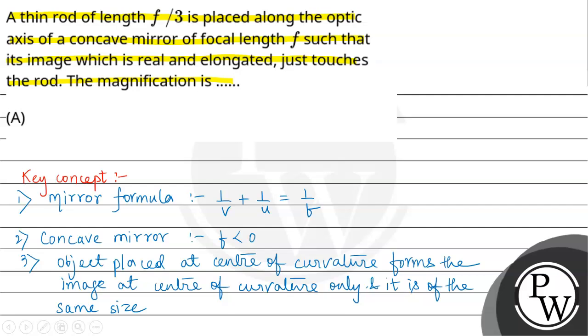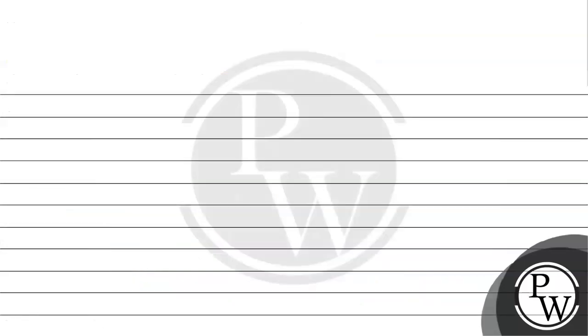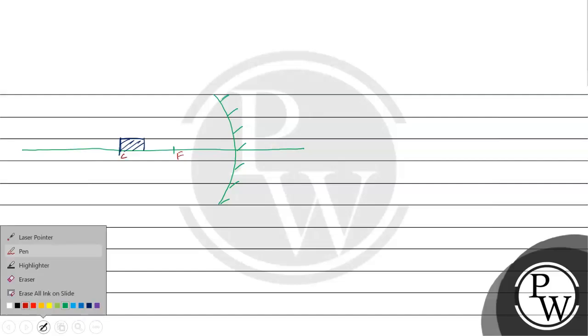With the help of this key concept we will proceed further. In our question, a concave mirror is given. This is the concave mirror, this is the principal axis. Here is the focus, this is center. I have an object, and the image is at the center, same size.